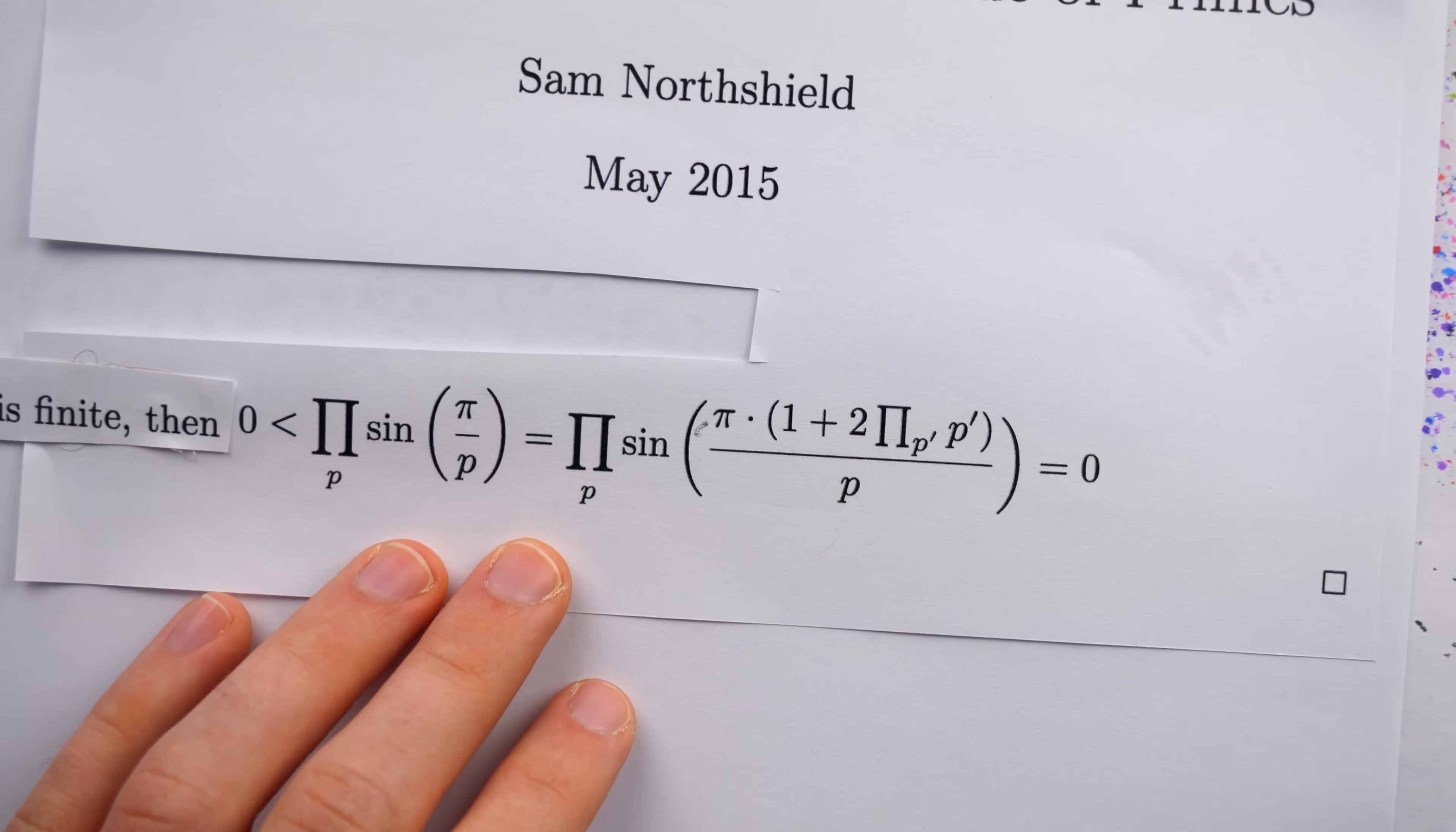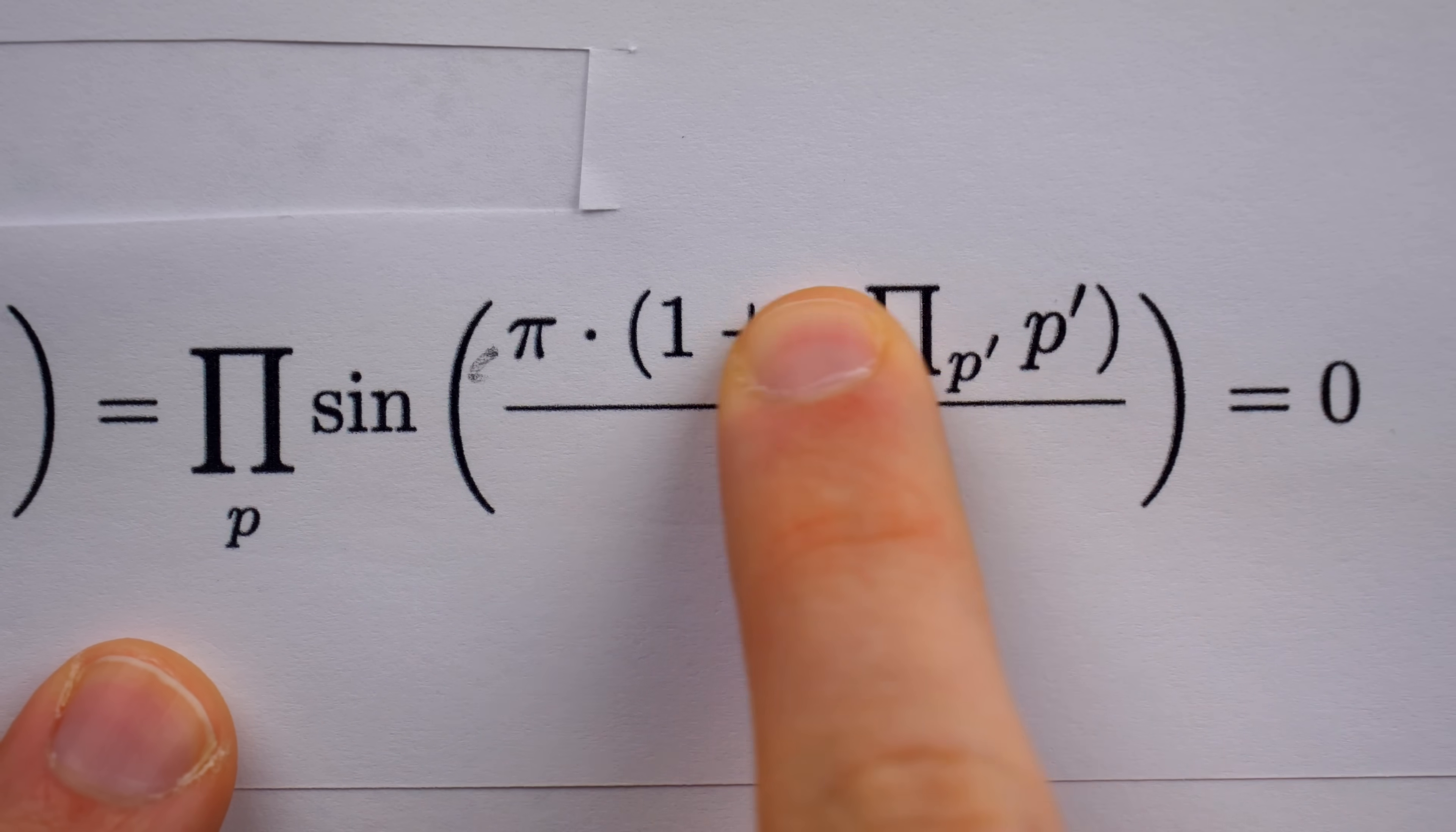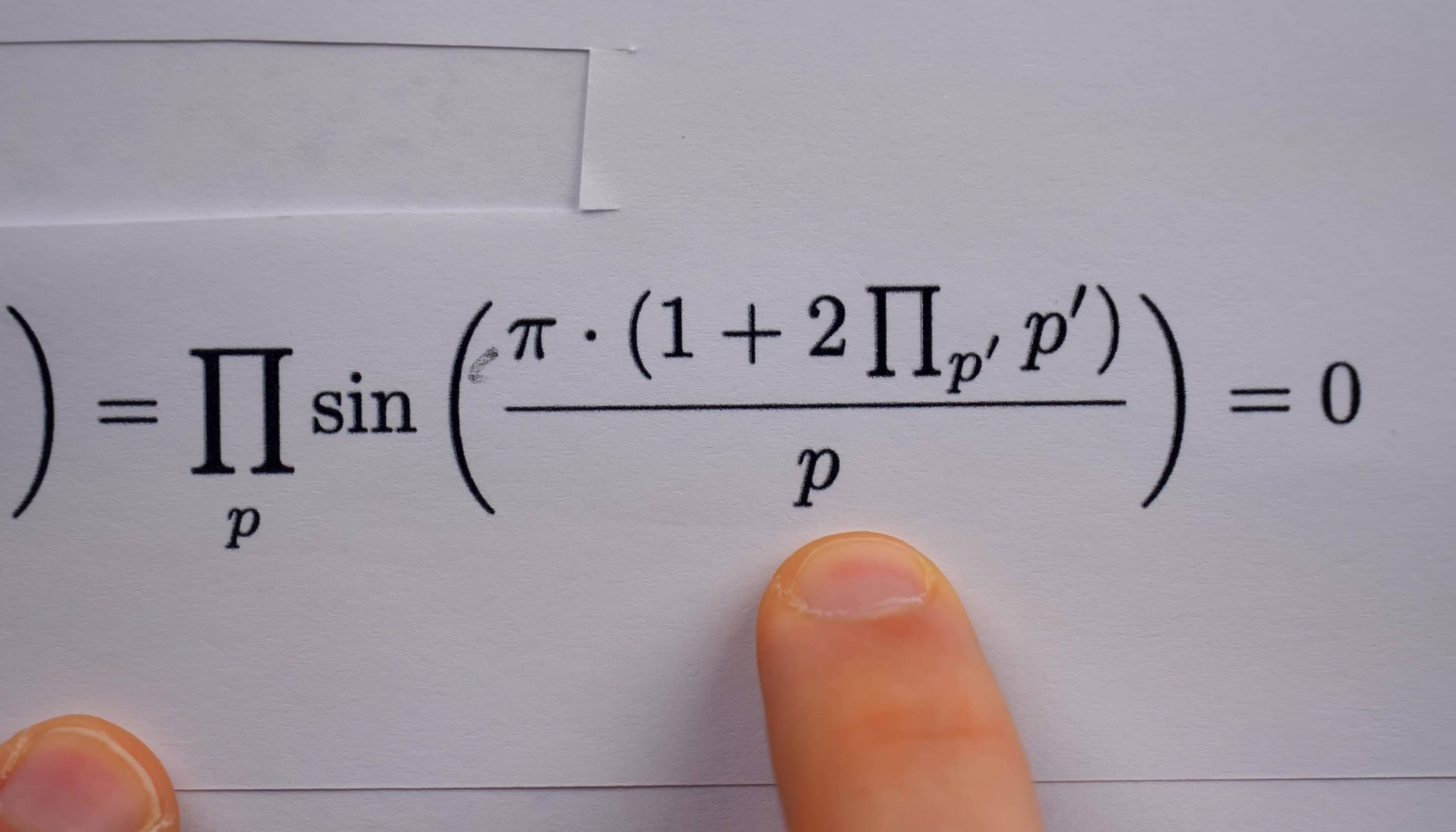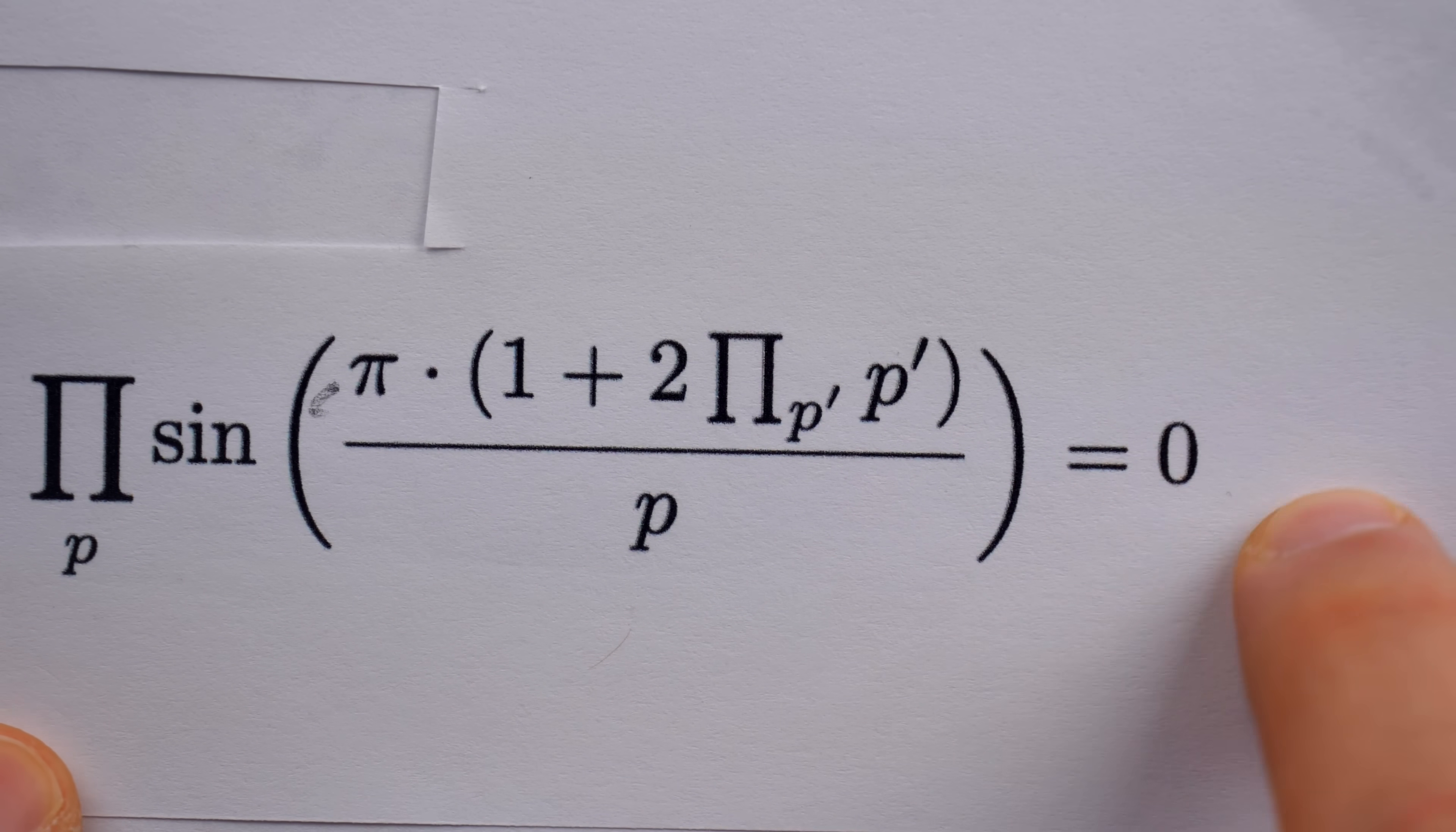Whereas this proof accepts that the list is complete to assert that this number will be divisible by one of the primes, and thus delaying the contradiction to the end of the equation with the equal zero.